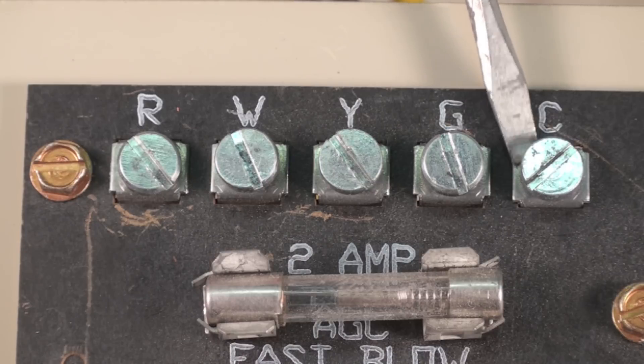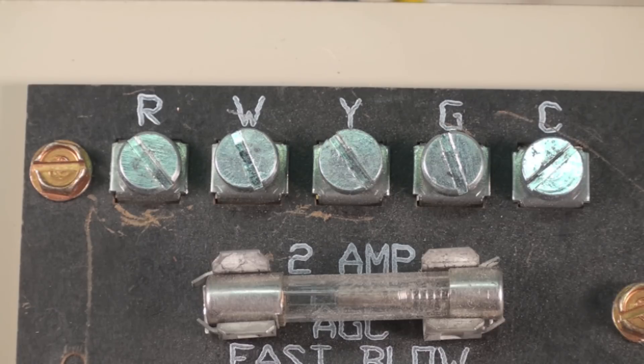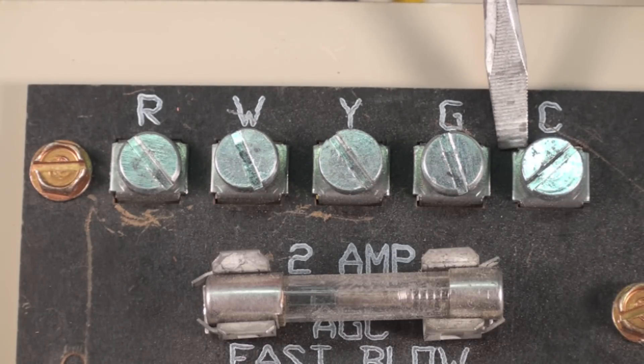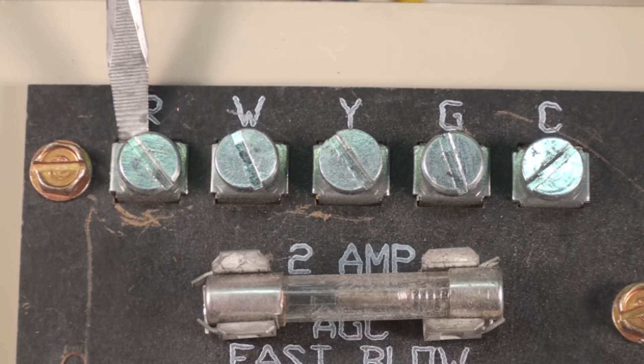The C is for common. It is oftentimes not switched. Generally that's how it is, though it isn't always true. But this is the one that's always hooked up. R, on the other hand, is the one that's switched.